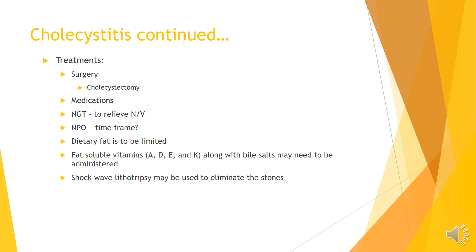Patients may need an NG tube to help relieve nausea and vomiting, and may be placed NPO — this can be short-term or longer. Determining the time frame for NPO status and having them restrict their dietary fat are important considerations. If we need to increase their nutritional status, we would provide them with fat-soluble vitamins A, D, E, and K, along with bile salts.